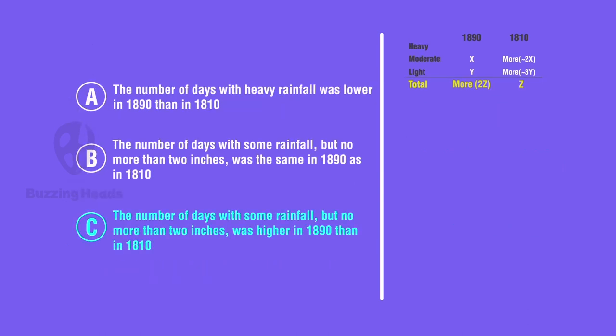C. The number of days with some rainfall but no more than two inches will be more in 1890 than in 1810. The rainfall days with less than two inches are days with moderate and light rainfall. The light rainfall days are also more in 1810. So, combined it is not possible to have more such days in 1890. So, wrong and this is eliminated.